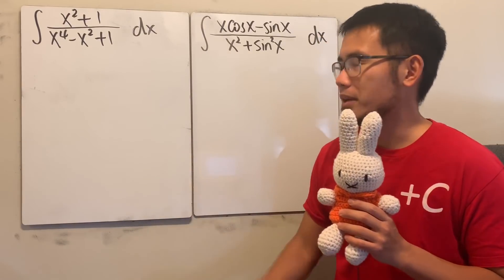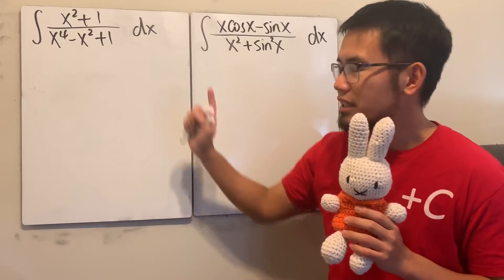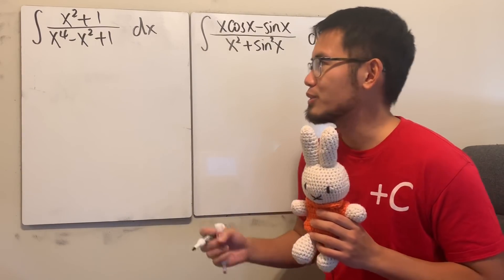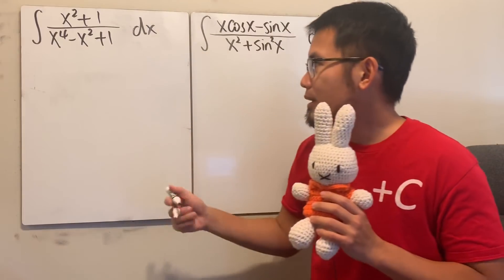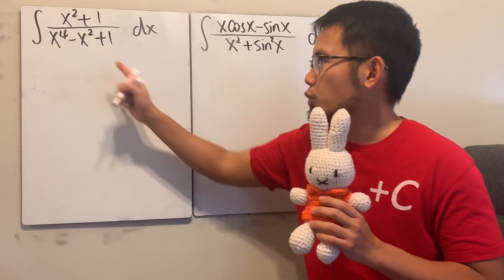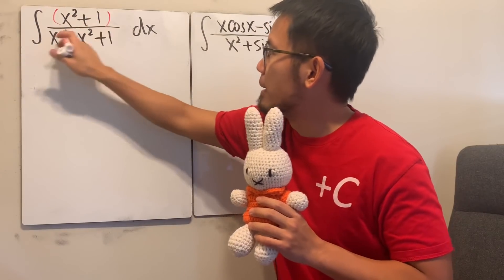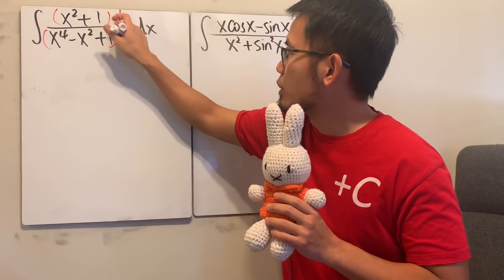It does look familiar, huh? Because we actually did that in the 100 integrals video already. And if you have seen that already, thank you so much. Well, right here, we can actually complete the square on the bottom, but we will have to first divide the top and bottom by x squared. So let me just write that down right here for you guys.